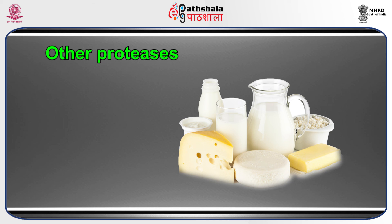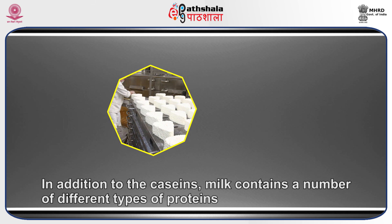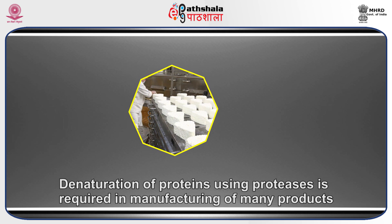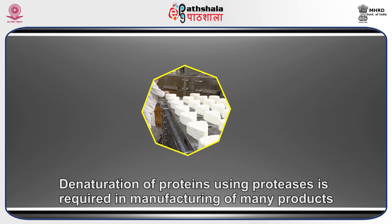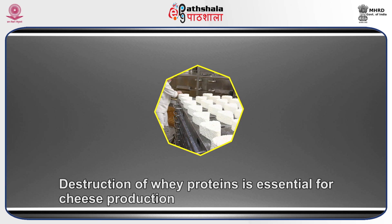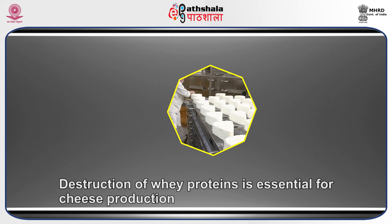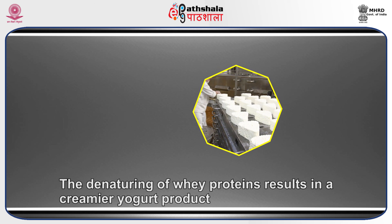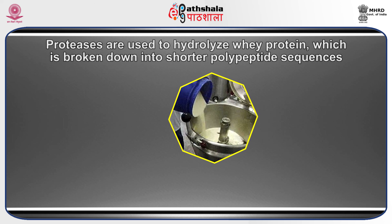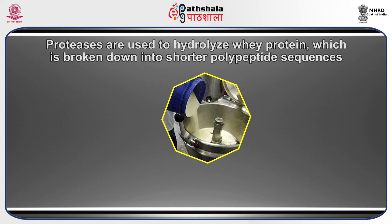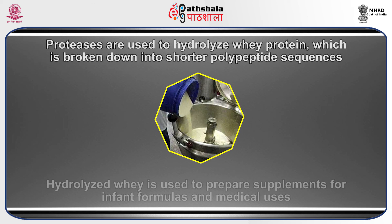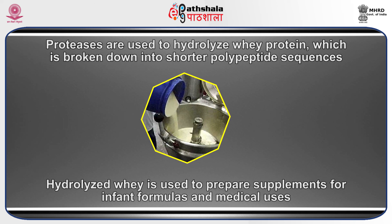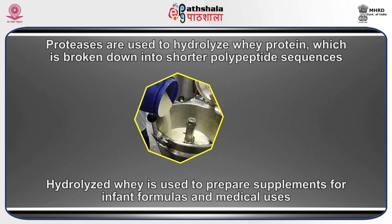Lactase is also available at retail for household use in treating lactase-containing dairy products. In addition to caseins, milk contains a number of different protein types, and denaturation using proteases is required in manufacturing many products. For instance, destruction of whey protein is essential for cheese production, and denaturing whey proteins results in a creamier yogurt. Proteases are used to hydrolyze whey protein into shorter polypeptide sequences. This hydrolyzed whey is used to prepare supplements for infant formulas and medical uses, as it is less likely to cause allergic reactions.